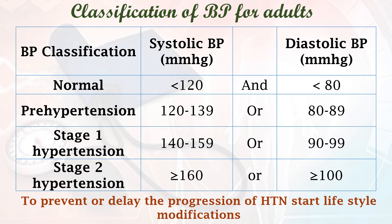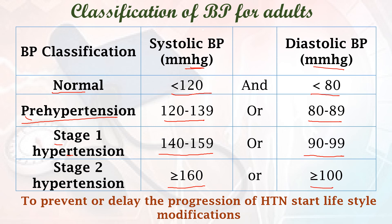This is the classification of blood pressure for adults. When the systolic BP is less than 120 mmHg and diastolic BP is less than 80 mmHg, we say it is normal blood pressure. When systolic BP is 120 to 139 and diastolic BP is 80 to 89, we say it is pre-hypertension. When systolic BP is between 140 and 159 and diastolic BP is 90 to 99, that is stage 1 hypertension. When systolic BP is 160 or more and diastolic BP is 100 or more mmHg, we diagnose stage 2 hypertension.